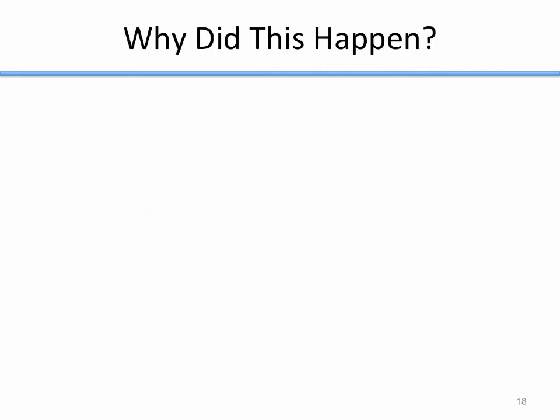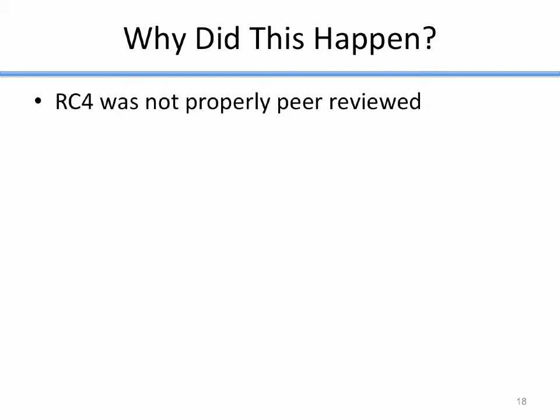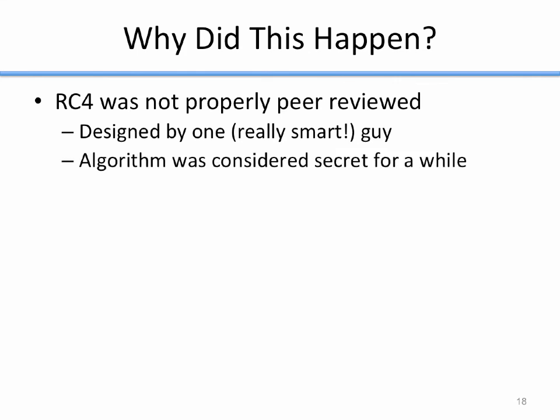Why did this happen? How were these mistakes made? First, RC4 was not properly peer-reviewed. It was designed by one person — Ron Rivest, one of the inventors of RSA and modern public key cryptography, potentially one of the best cryptographers in the world. But he designed it himself, kept it secret for a while, and used it in his company. It was not properly peer-reviewed by other cryptographers until after it had already been widely deployed. After people began analyzing it, they found flaws — including the mathematical weakness that allows deriving the key from keystream.